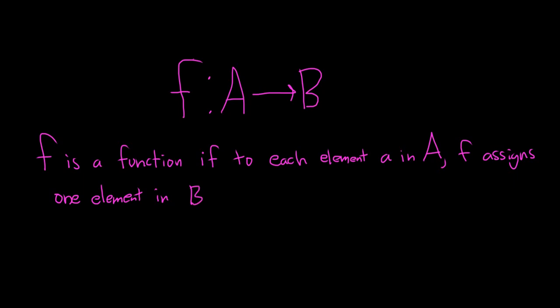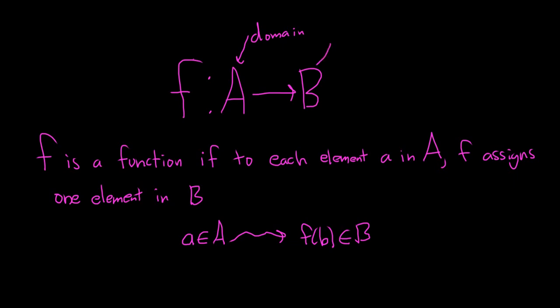So to every element in A, f assigns an element in B. The way we typically write that is: if we have a in A, this element goes to f of a, which is in B. So A has a name — big A is called the domain, it's the set of all inputs. So every element in A has to get assigned. And B is called the codomain. So domain and codomain.